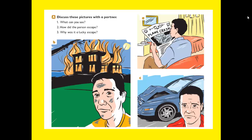In this lesson, lesson number seven, we want to learn how to write a story. Let's do the first exercise, exercise number A. Discuss these pictures with a partner. Here we have three pictures: picture number A, picture number B, and picture number C. How can we discuss these three pictures by dealing with these three questions: what can you see, how did the person escape, and why was it a lucky escape.